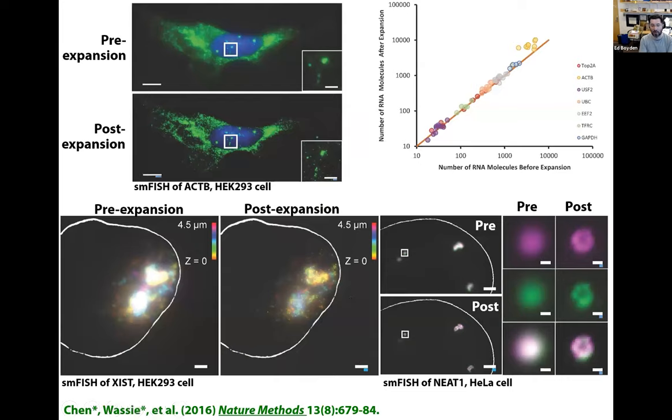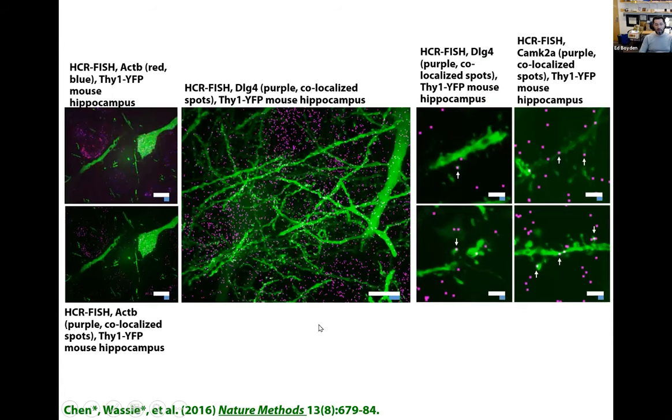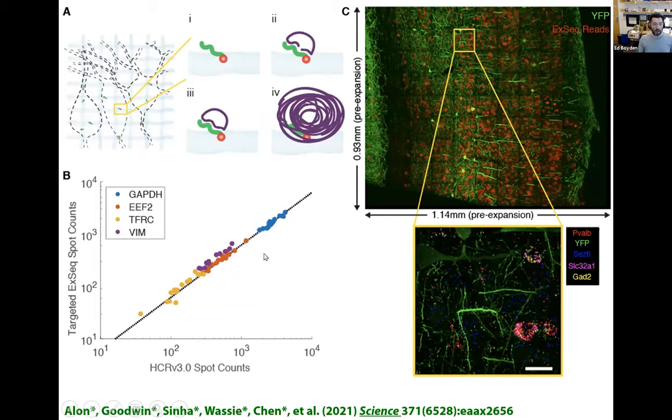This is work we did with Eric Betzig's group, expanding and then using light sheet microscopy to go at blazingly fast speeds. On the upper right, we can look at mitochondrial and lysosomal proteins. At the bottom, we're looking at myelin. This work was spearheaded by Ruixuan Gao, Joshua Asano, and Gokul Upadhyayula working across our two groups.